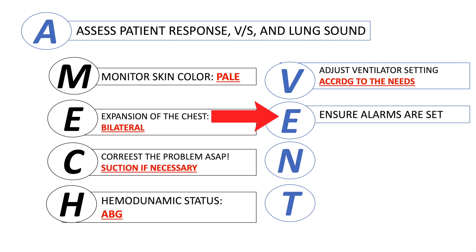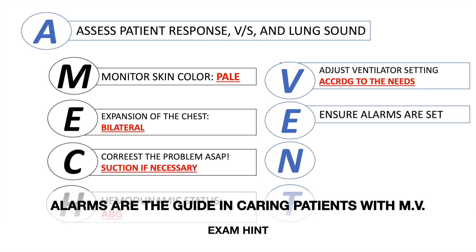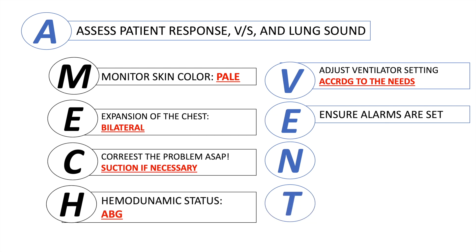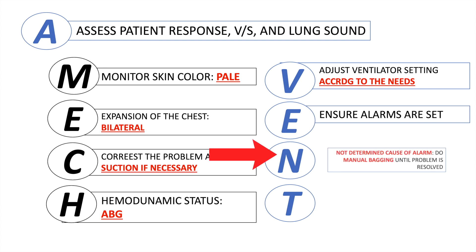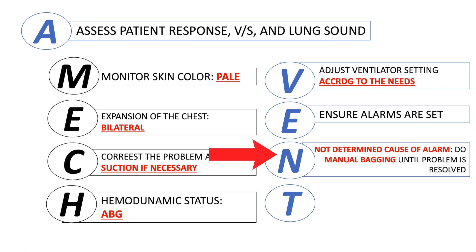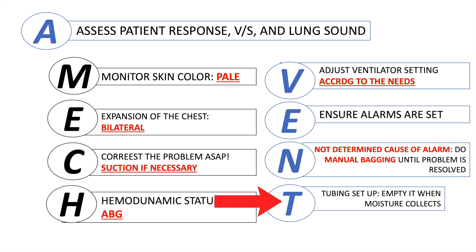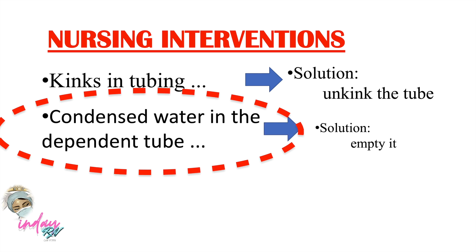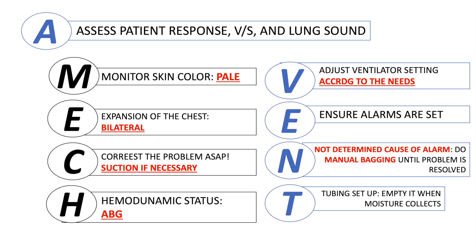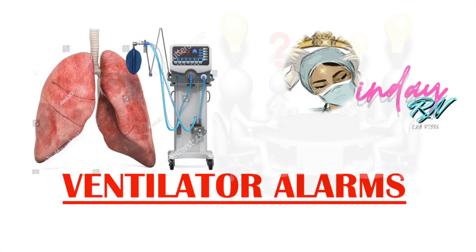E: Ensure alarms are set — alarms are your guide in caring for patients, so never turn them off. N: If the cause of the alarm is not determined, do manual bagging until the problem is resolved. T: Tubing setup — empty the tubing when there is moisture, as condensed water in the dependent tube should be emptied. That covers the A MECH VENT mnemonic for ventilator nursing care.